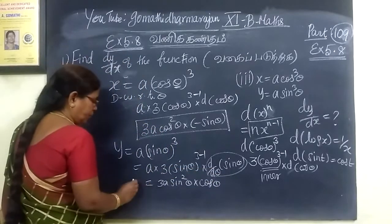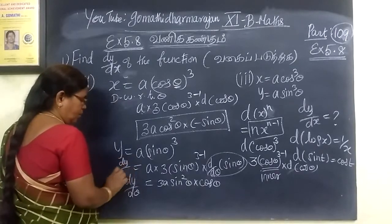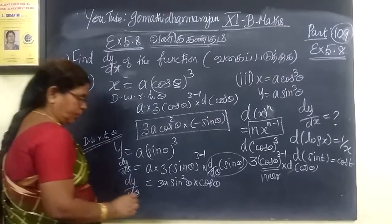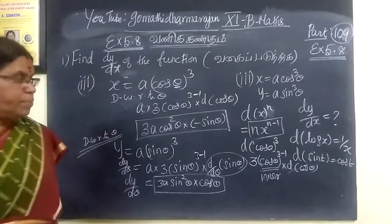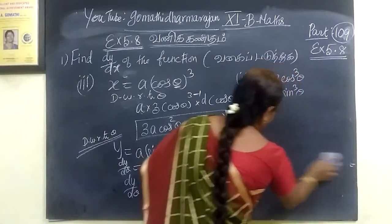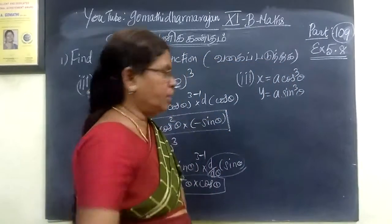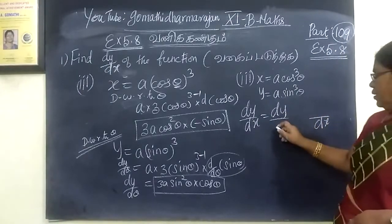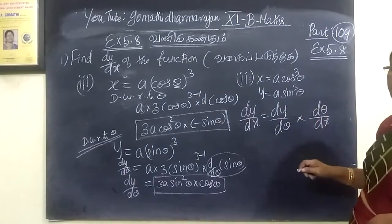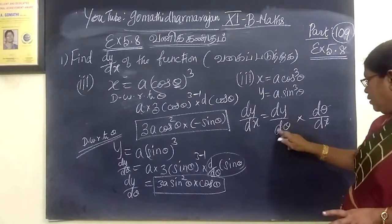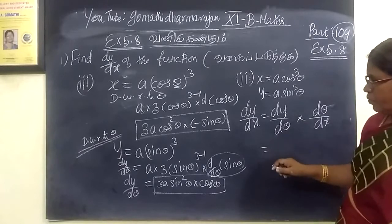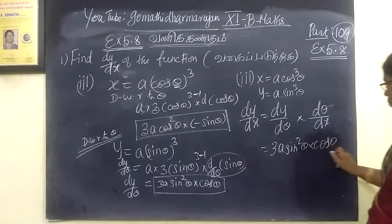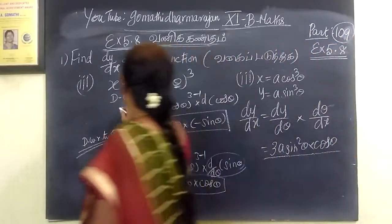So this is what we call dy by dθ. This is what we call differentiate with respect to θ. This is what we call dy by dx. So we are finding dy by dx. So dy by dx equals differentiate with respect to dθ. So dy by dx is dy by dθ divided by dx by dθ.